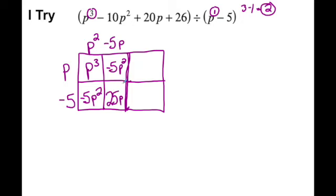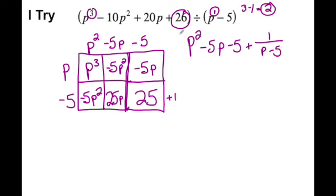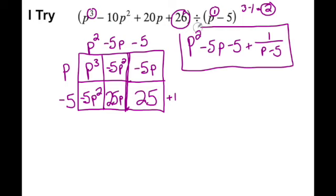I need to add on to this box because I need to finish off. I have 25p already and I need to get down to 20p, so I need negative 5p here, making this negative 5. So negative 5 times p is negative 5p, and negative 5 times negative 5 is 25. I'm shooting for 26, so I just need to add 1 to get to 26 — the remainder is 1. My answer is p squared minus 5p minus 5 plus 1 over p minus 5.